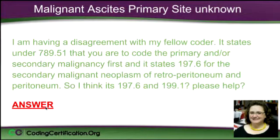Malignant ascites, primary site unknown. This was kind of interesting because I think a lot of people don't understand what ascites are. The question was: I'm having a disagreement with a fellow co-worker. It states under 789.51 that you are to code the primary and/or secondary malignancy first, and it states 197.6 for the secondary malignant neoplasm of retroperitoneum and peritoneum.